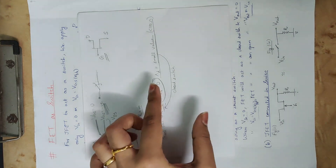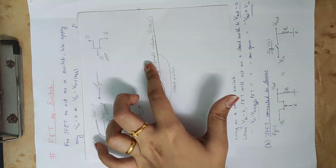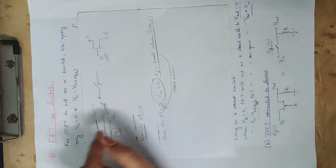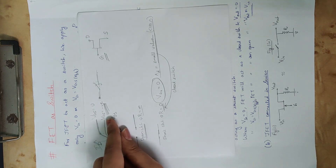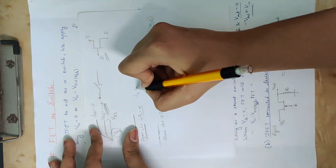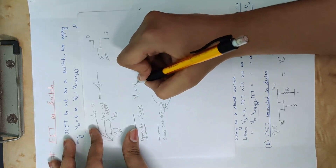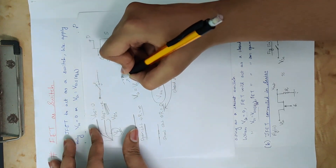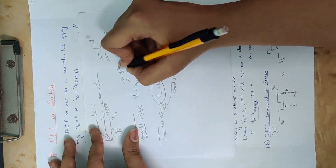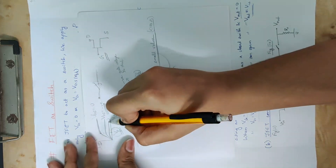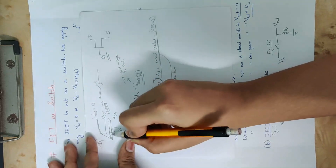When VGS equals 0, drain resistance can be approximated as a closed switch. We then increase VGS to a negative voltage so that drain current is approximately 0 — that is, close to the X-axis.